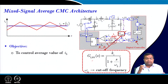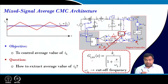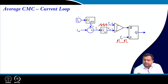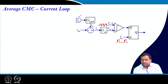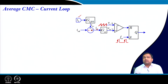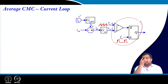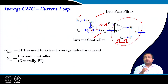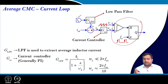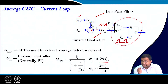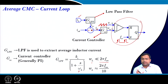The objective is to control the average current to track the reference current. The inductor current sense passes through a low-pass filter, is subtracted from the reference to produce an error current, passes through a current controller, and is compared to a sawtooth waveform to generate the PWM modulator output — a trailing-edge modulator. A good thumb rule is that the low-pass filter bandwidth should be about one-tenth of the switching frequency, much lower than the switching frequency.